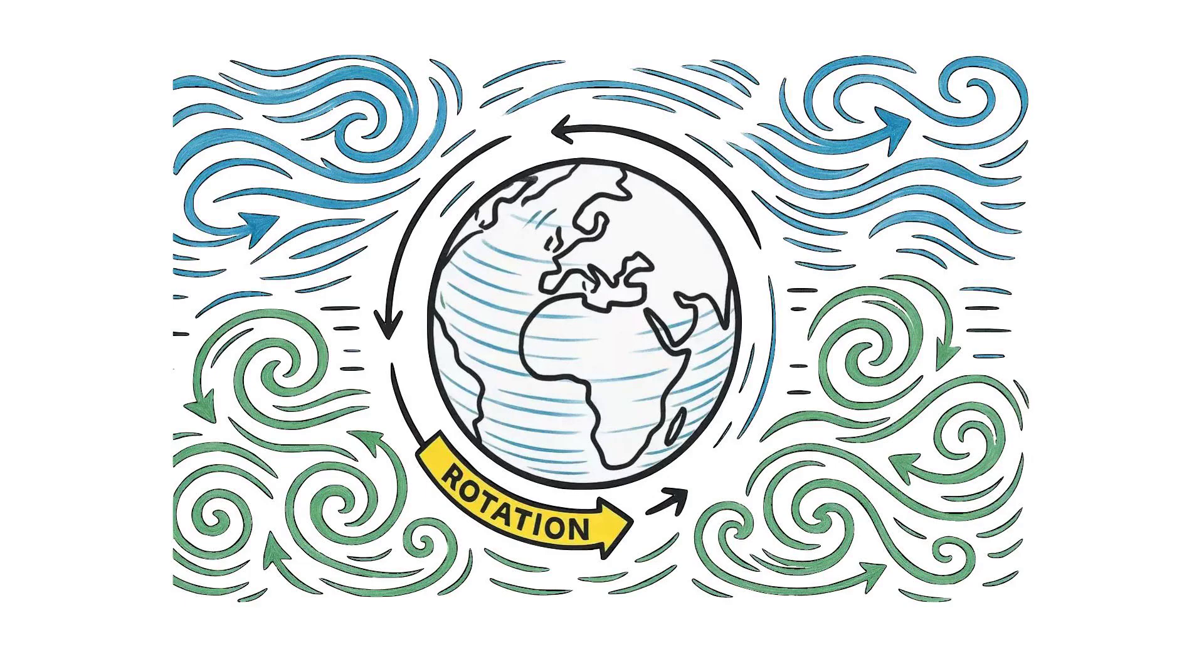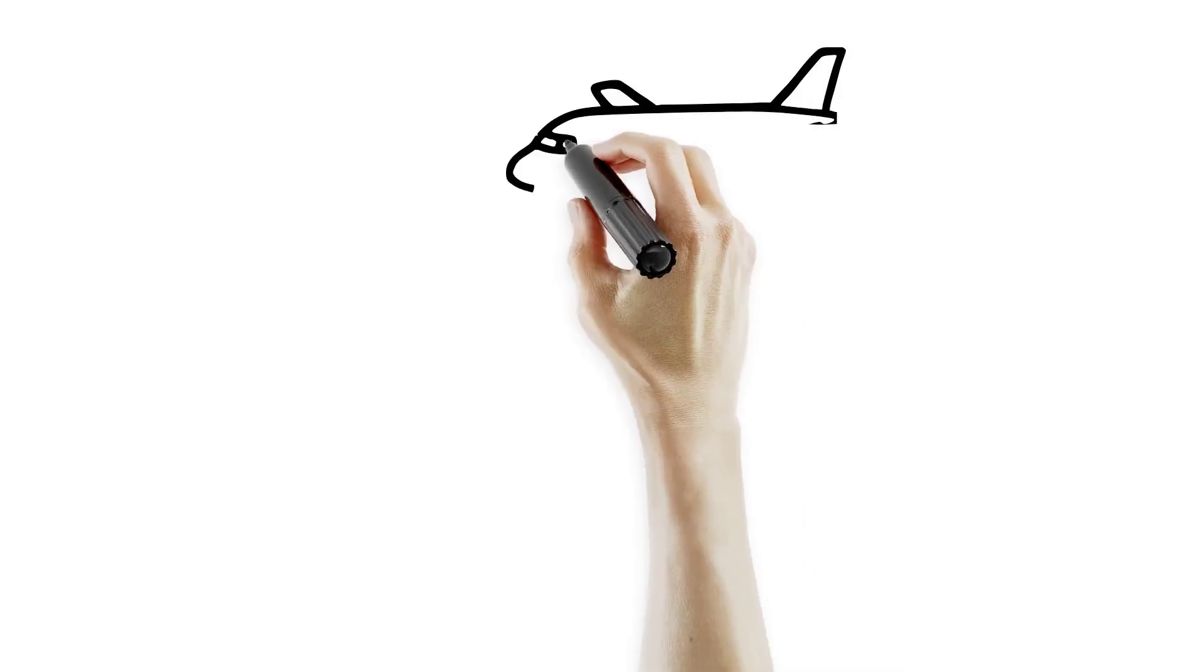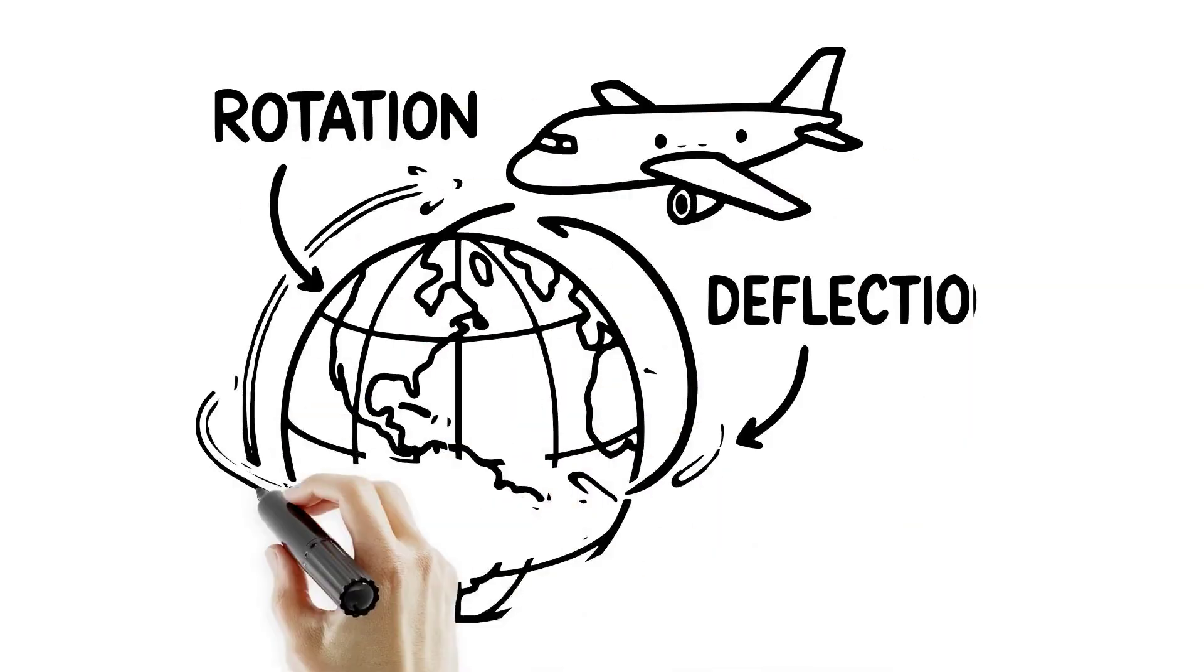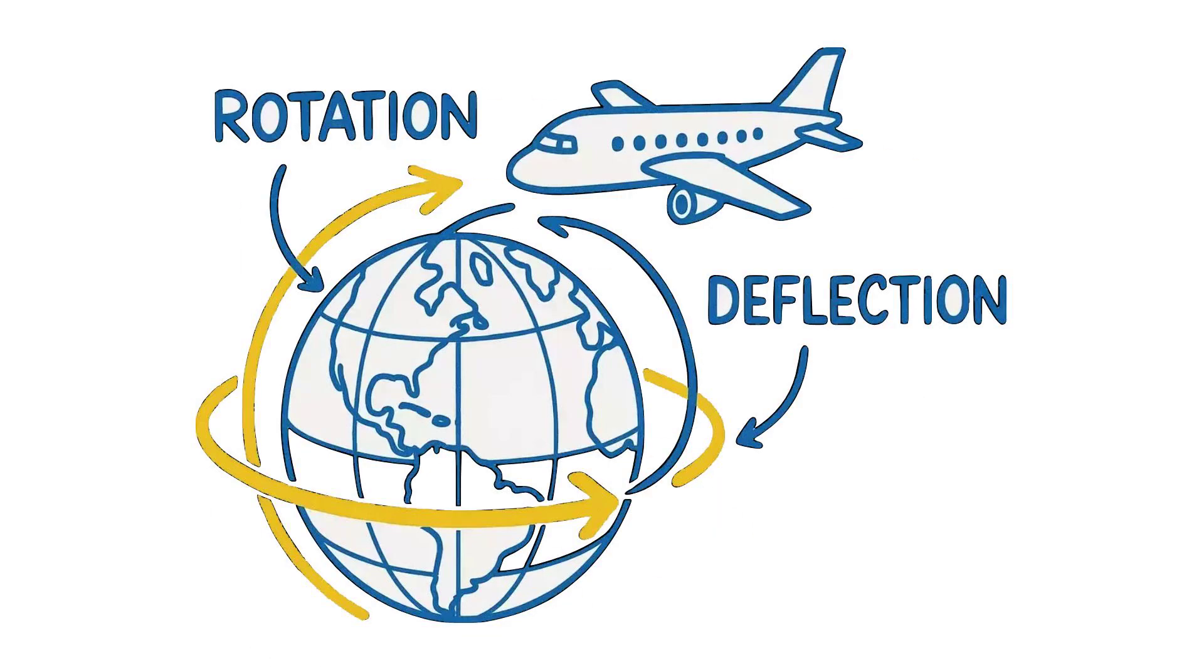The Coriolis effect is Earth's invisible hand, steering air and oceans like a vast rotating dance floor. The Coriolis effect is the apparent deflection of moving objects, like wind or planes, caused by Earth's rotation beneath them. It's not a real force, but a perceived shift from our rotating point of view.